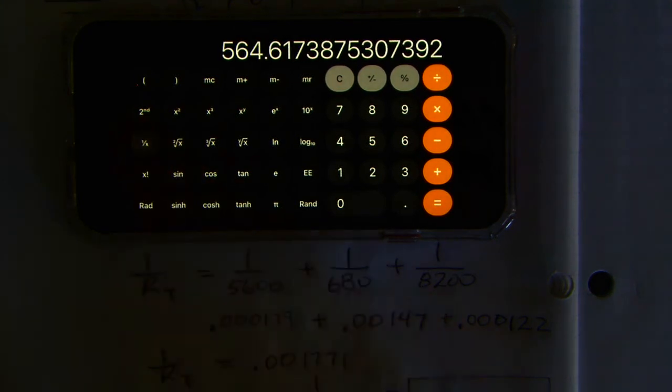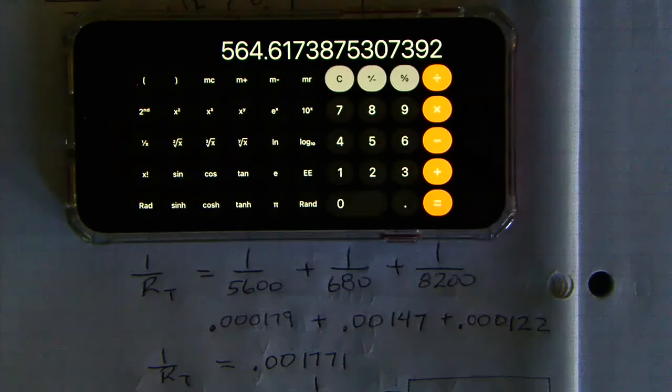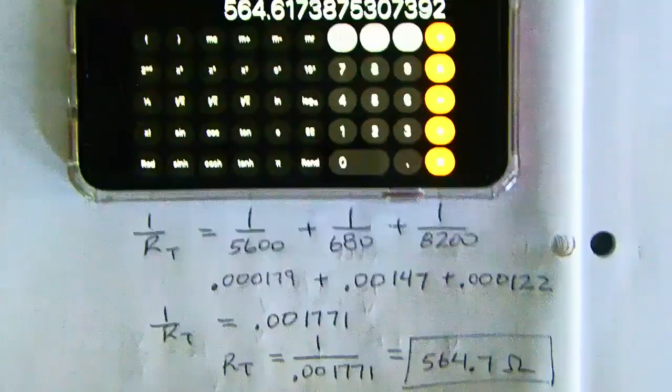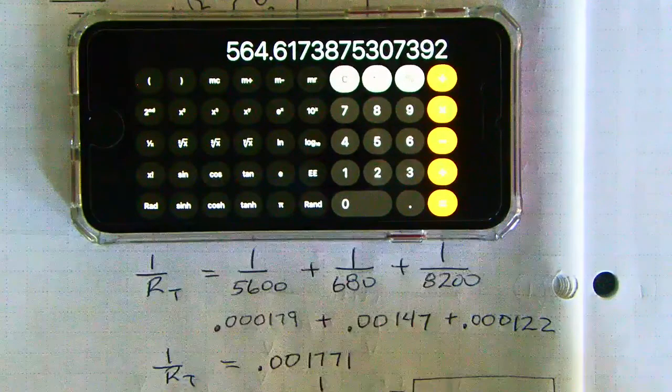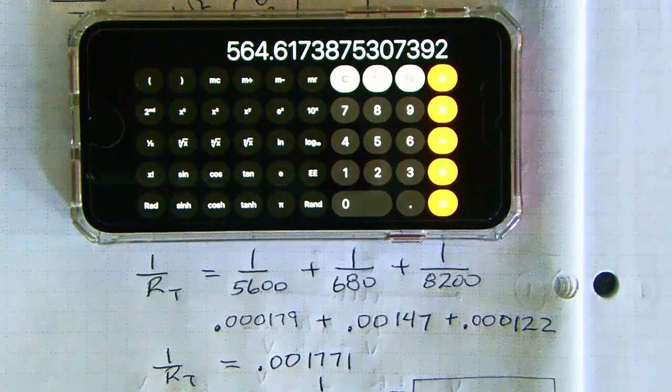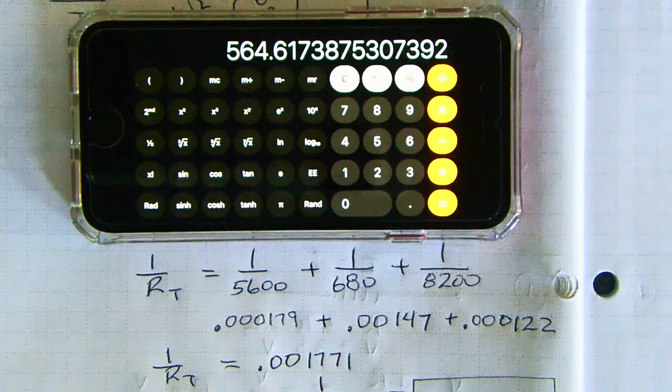And guess what, 1 over x of the answer is the answer that we got before, which was 564.7. And according to the calculator, it's 564.6. And guess what, that's close enough.